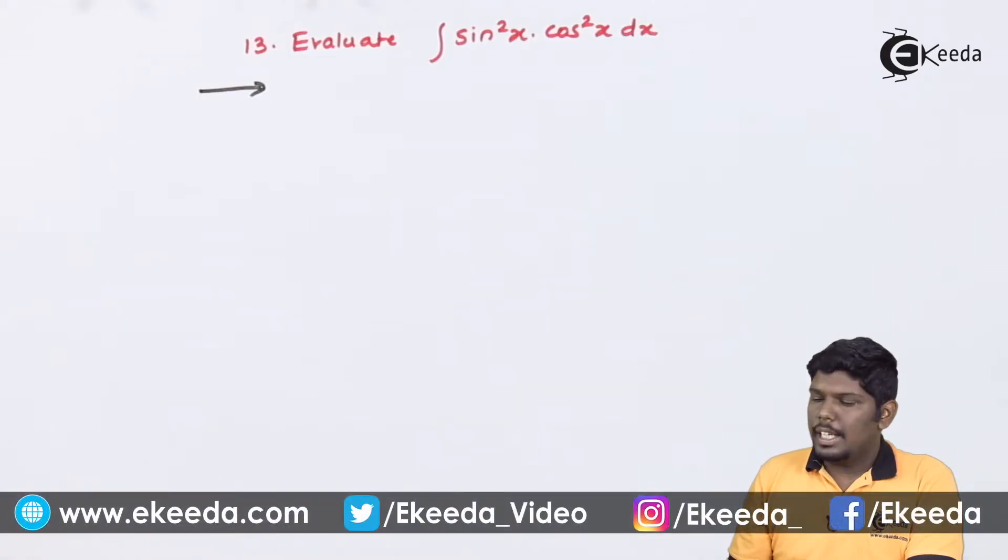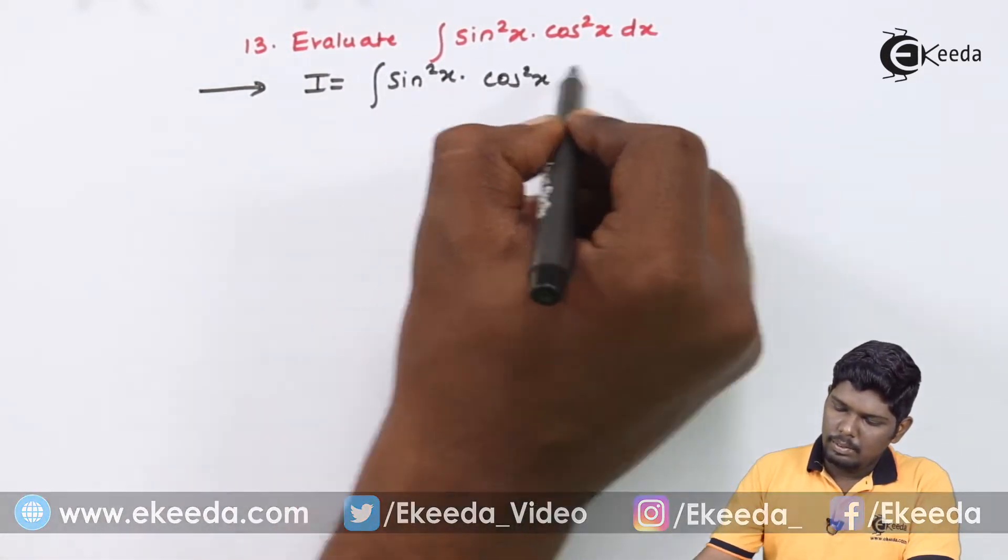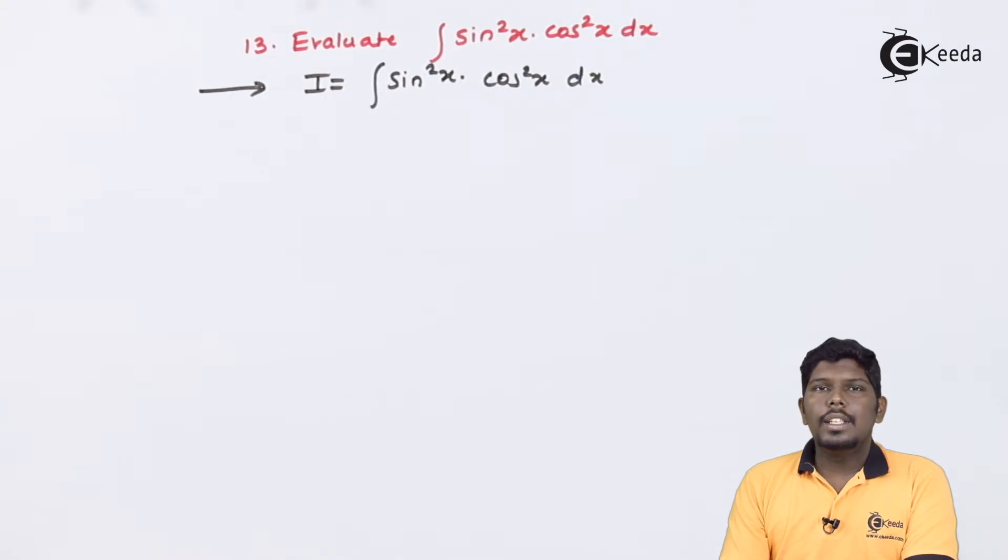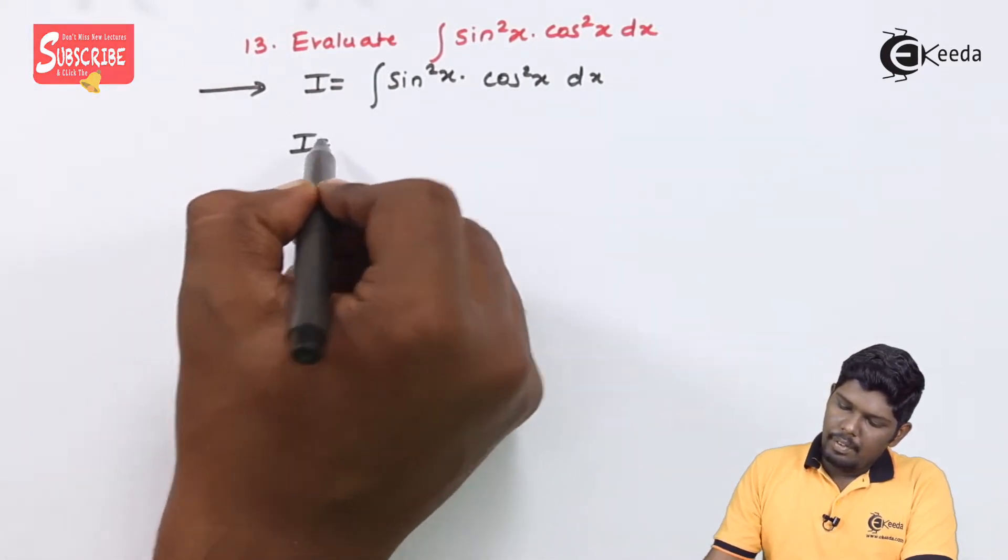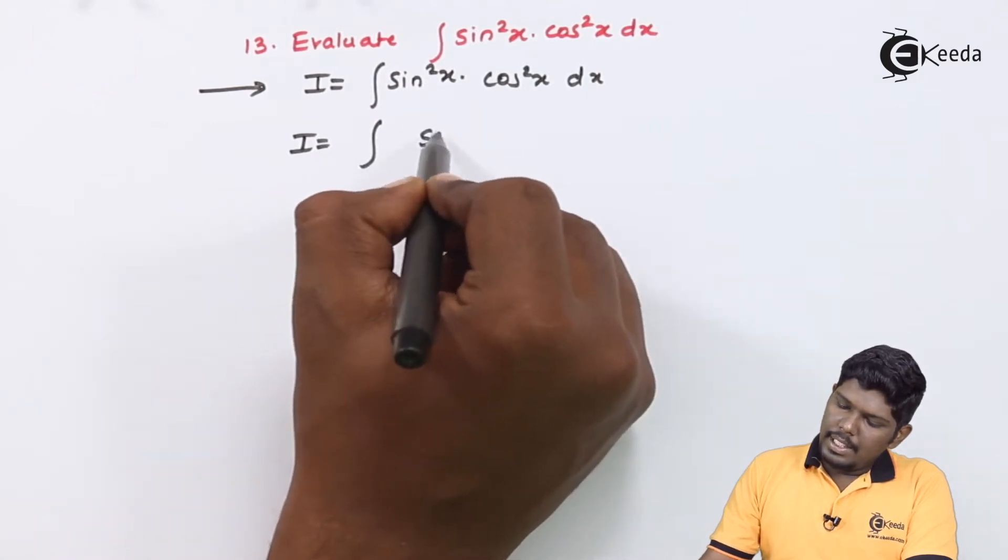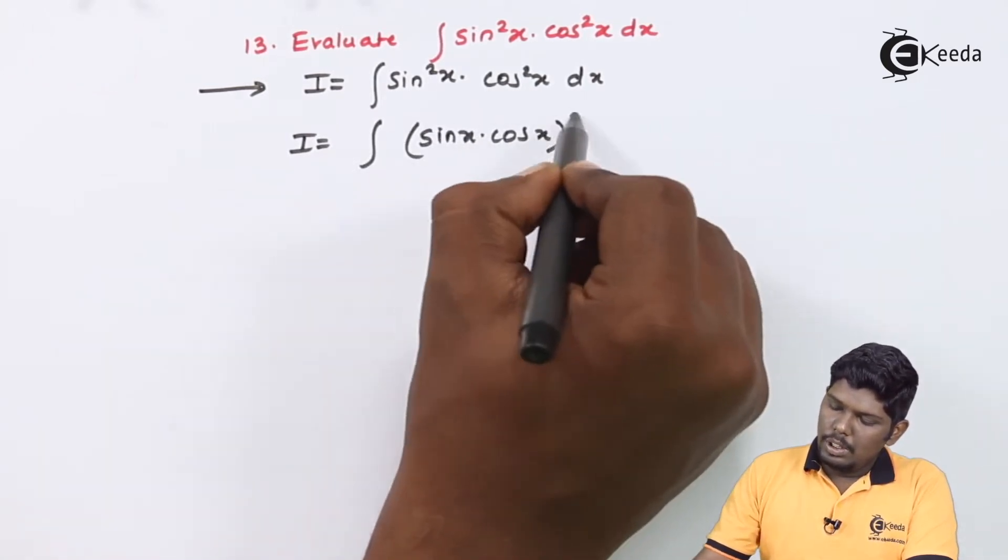Evaluate integral sin²x cos²x dx. Here you can see sin and cos are in the product form and they are present in the numerator. For that, the first step we can do is consider (sin x cos x)².